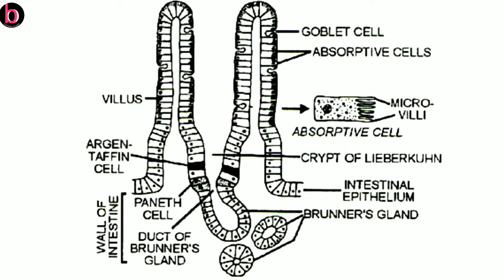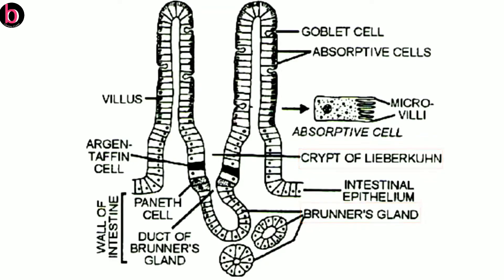Hello friends, in this video we will discuss the intestinal gland, which is the last digestive gland. We earlier discussed salivary gland, gastric gland, liver, and pancreas. This is the last one — intestinal gland. As seen in the diagram, there are two major parts: crypts of Lieberkühn and Brunner's gland.